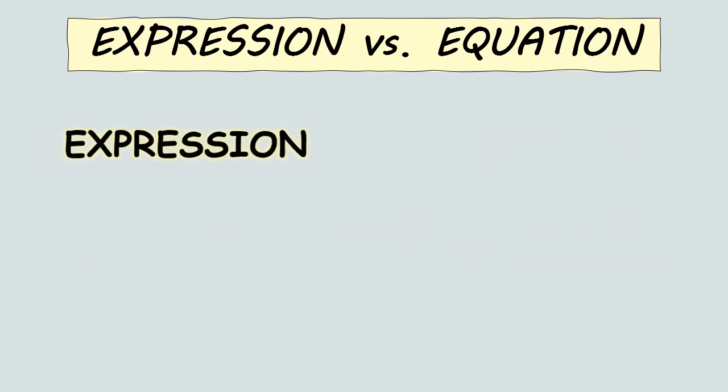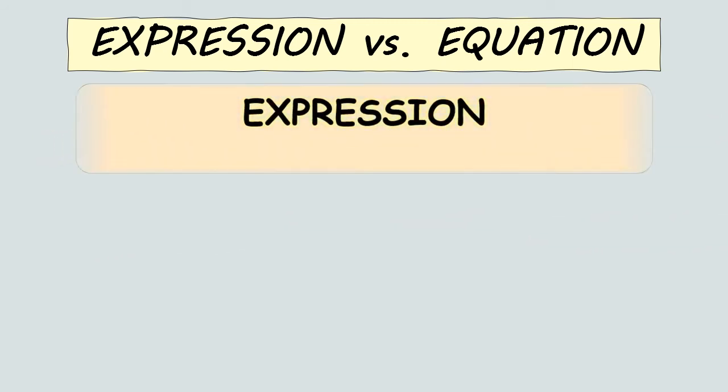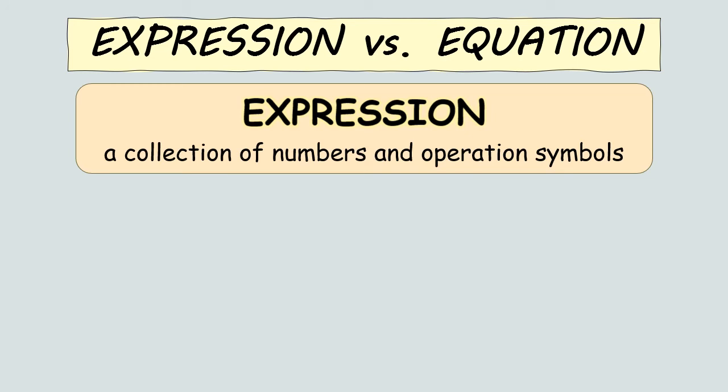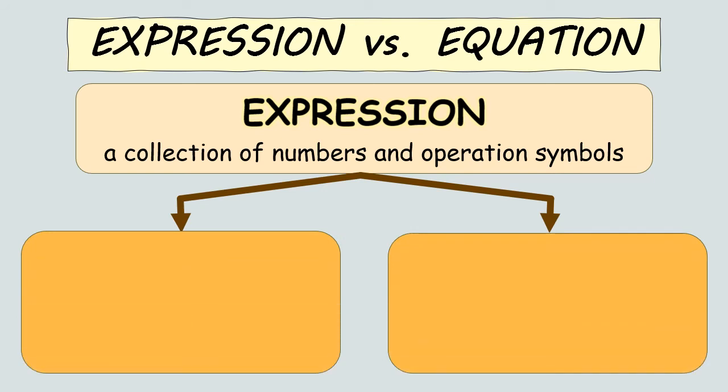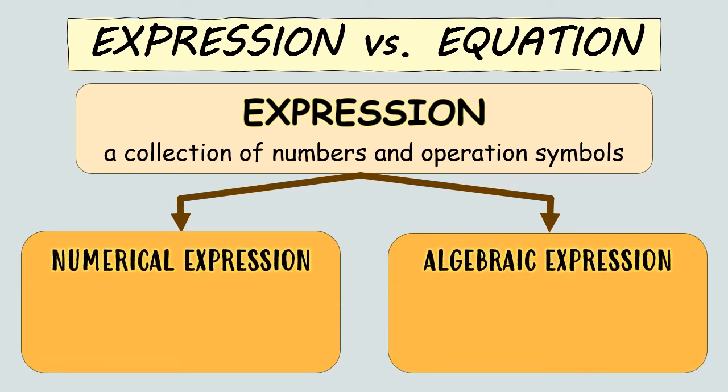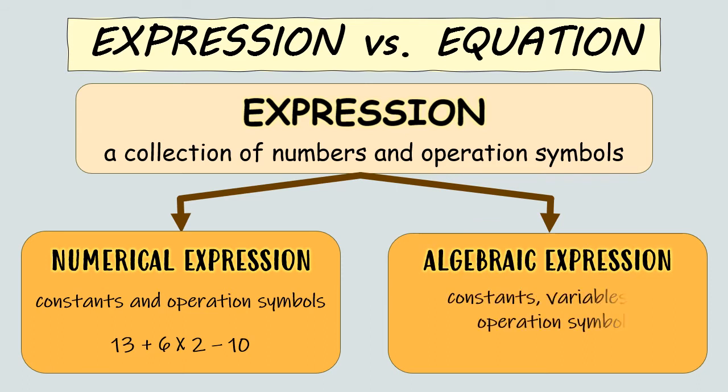In math, an expression is a collection of numbers and operation symbols. There are two types of expressions: numeric and algebraic. A numerical expression contains constants and operation symbols, while an algebraic expression has constants, variables, and operation symbols.